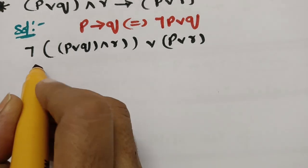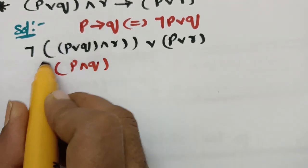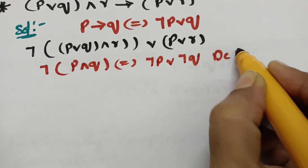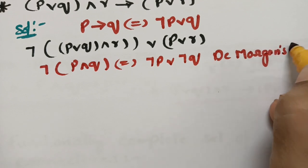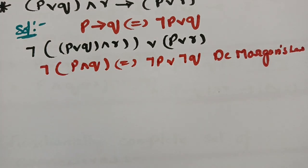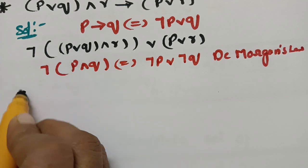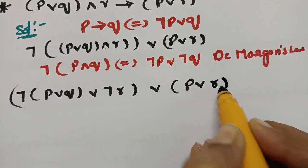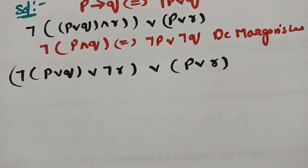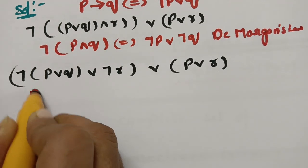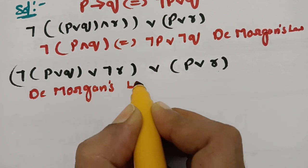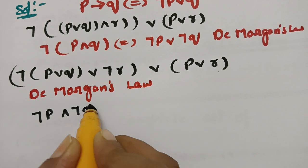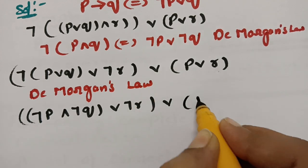Next, applying De Morgan's law — where negation of (P∧Q) gives negation P ∨ negation Q — sending the negation inside: negation of (P∨Q) becomes (negation P ∧ negation Q) by De Morgan's law, giving us (negation P ∧ negation Q) ∨ negation R ∨ (P∨R).